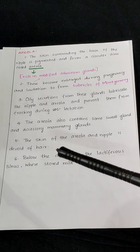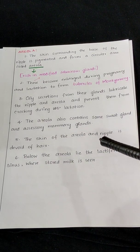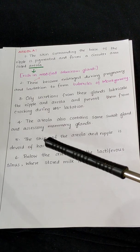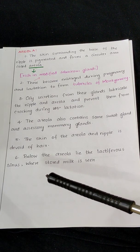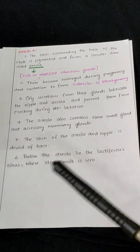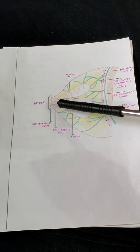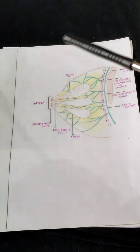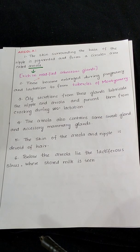The areola also contains some sweat glands and accessory mammary glands. The skin of the areola and nipple is devoid of hair. Below the areola lie the lactiferous sinuses, where stored milk is found — the milk is stored in the lactiferous sinus and drained through the lactiferous duct.